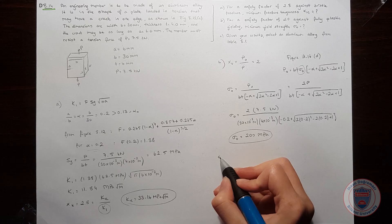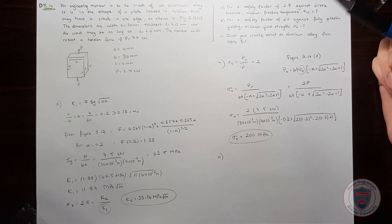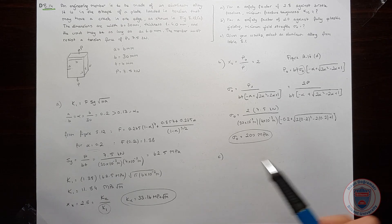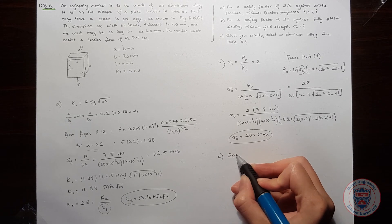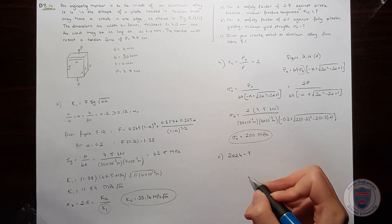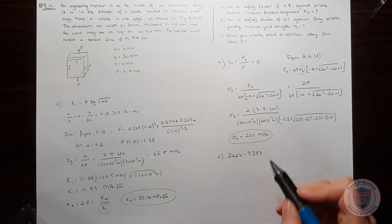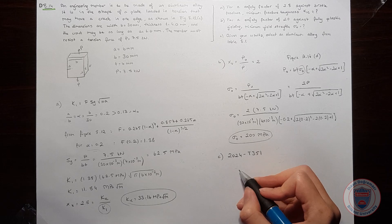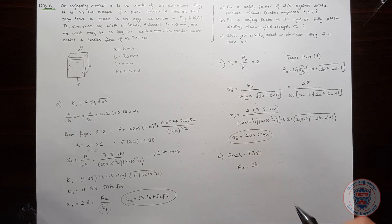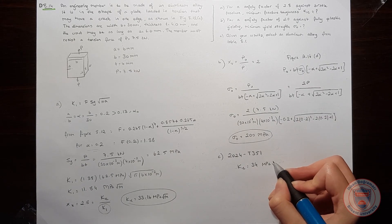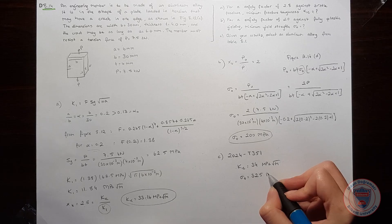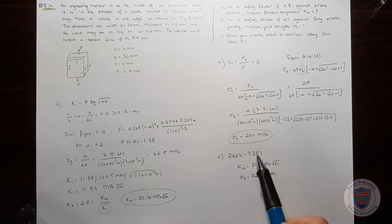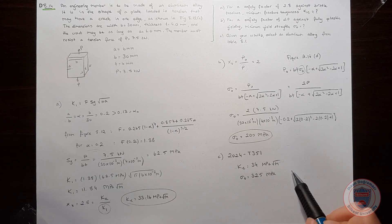Let's talk about part C. When we look at table 8.1, we should find the alloy which has a minimum toughness of 33.16 and a minimum yield strength of 200 MPa. And when we look at the table, we saw that the alloy 2024 T351 satisfies our requirements because it has fracture toughness as 34 MPa square root meters and its yield strength is 325 MPa. And you can easily see that it satisfies our requirements. So we can select this alloy.